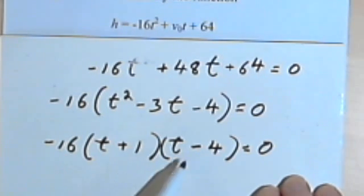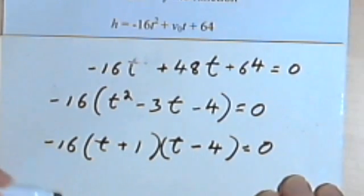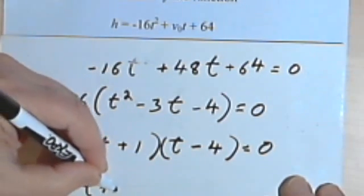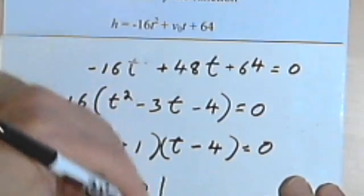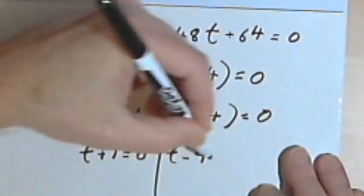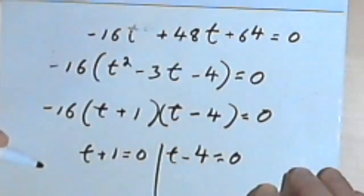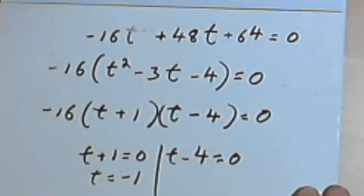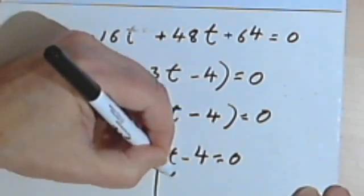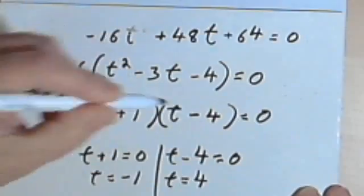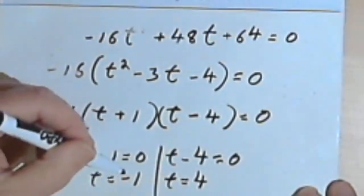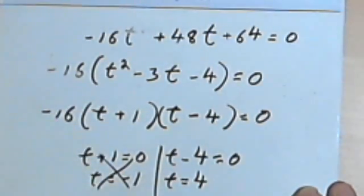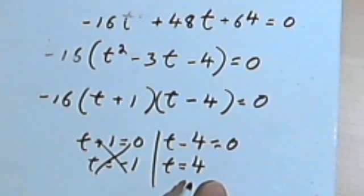So either t plus 1 equals 0, or t minus 4 equals 0. So t plus 1 equals 0, and t minus 4 equals 0. So that means t equals negative 1, or t equals 4. Well, I don't want a negative time. So this negative 1 is not gonna work. So it seems like the projectile is going to hit the ground after 4 seconds. So that's the answer to the first part of the problem.